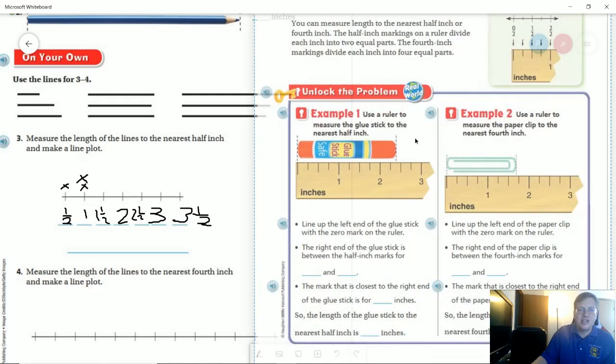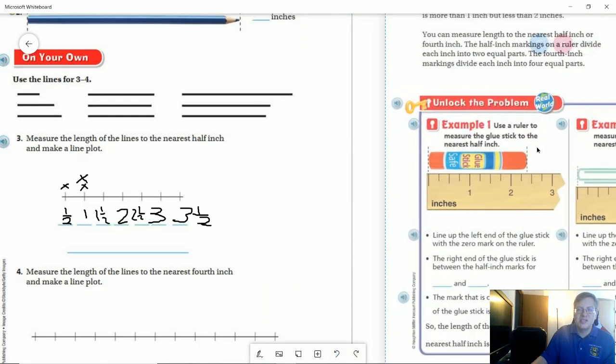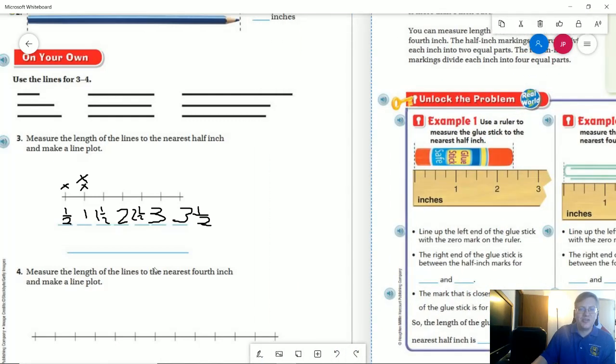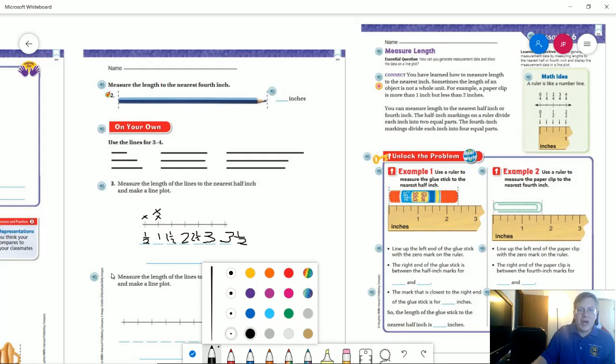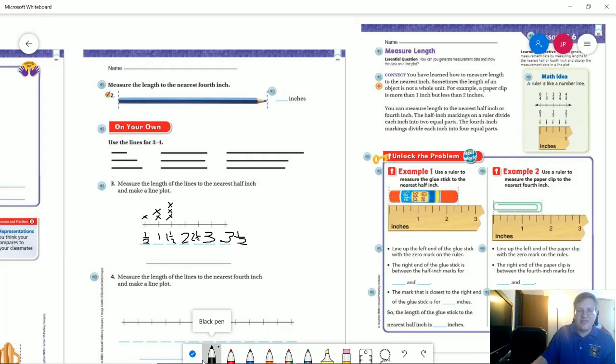Again, we're doing it to the nearest half inch in spite of the words that you're seeing covering up where it says the nearest quarter inch. The bottom one, they wanted us to do it for the quarter inch. So all of these three, we're going to say that they're about one and a half inches.